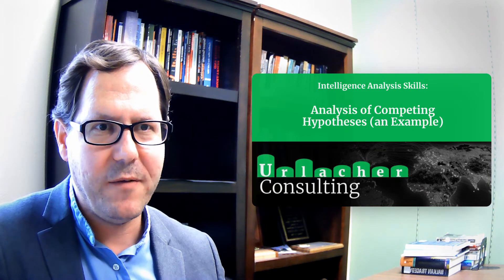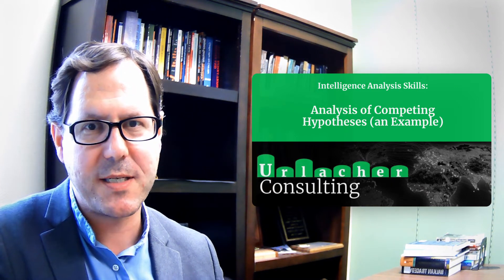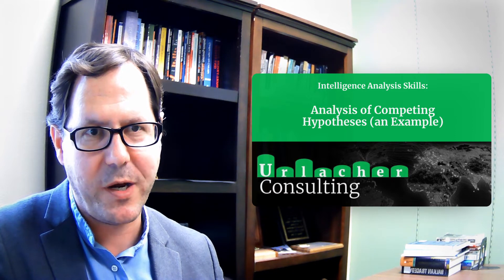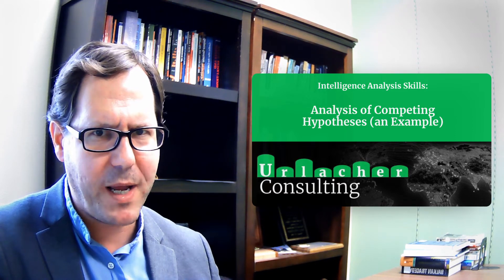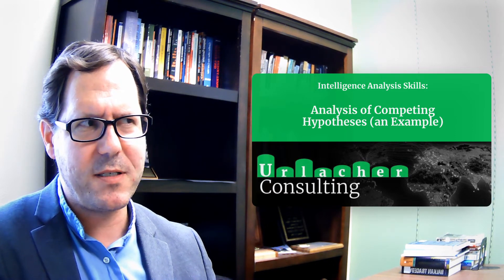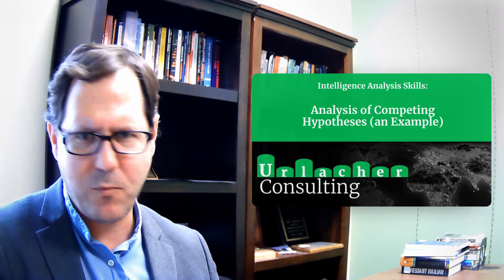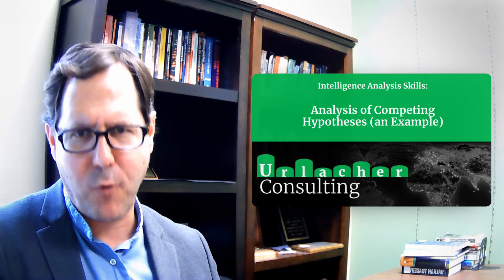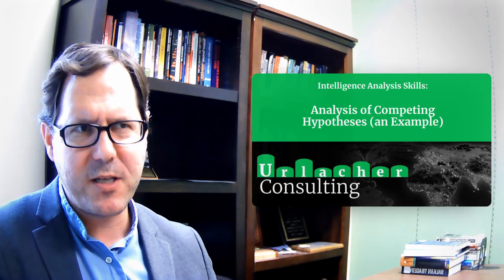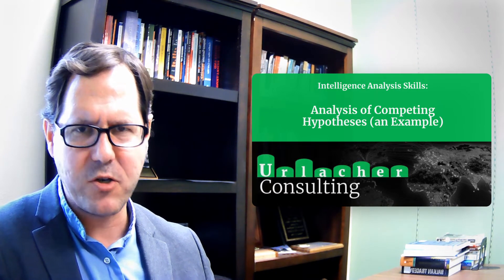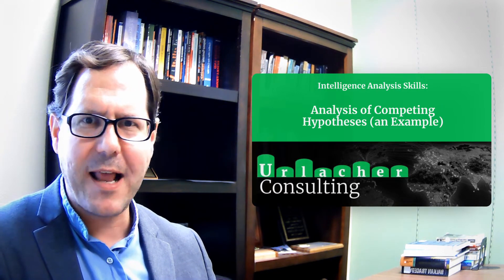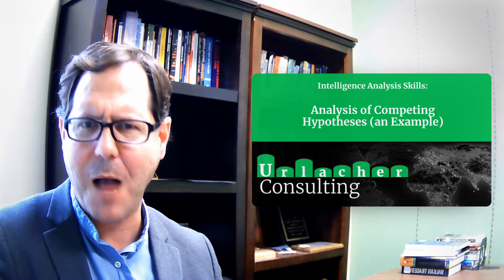We've been talking through this idea of analysis of competing hypotheses, which is a technique used by the US intelligence community to help counter confirmation bias. The idea is that in trying to answer a question about what's going on in the world, you put forward a variety of hypotheses and consider how the evidence lines up or doesn't line up with each of those hypotheses.